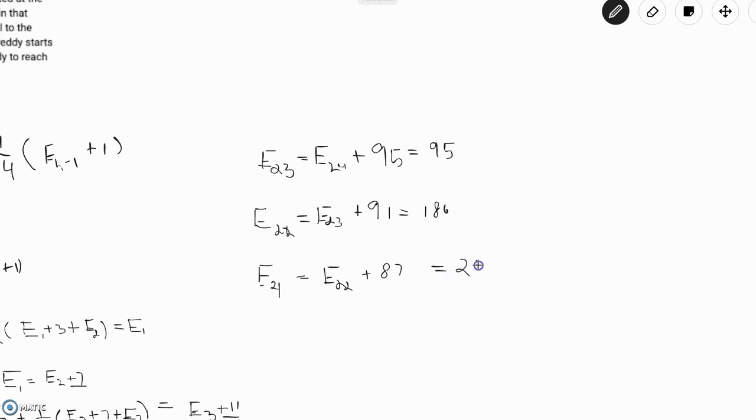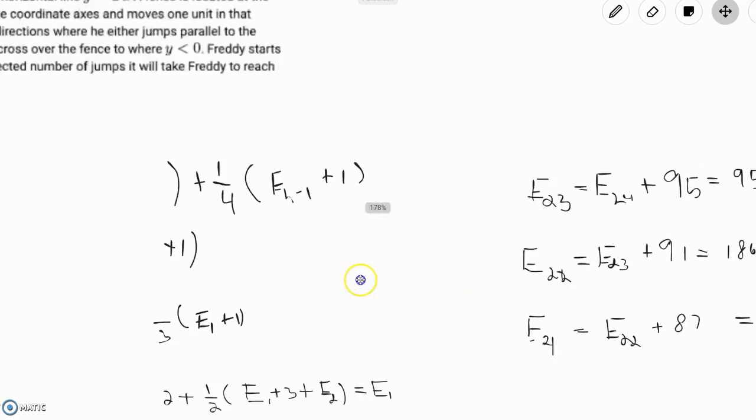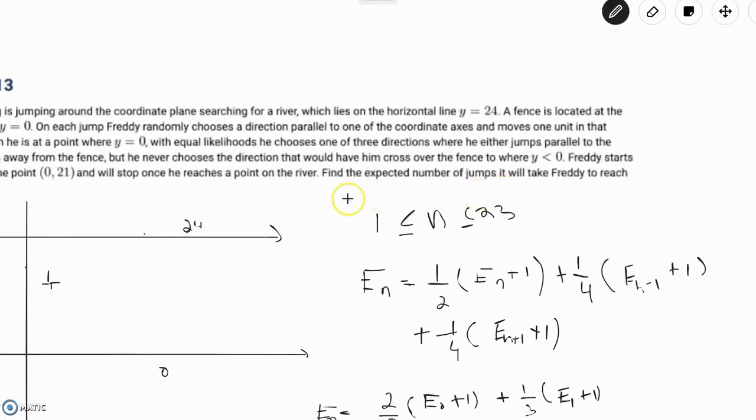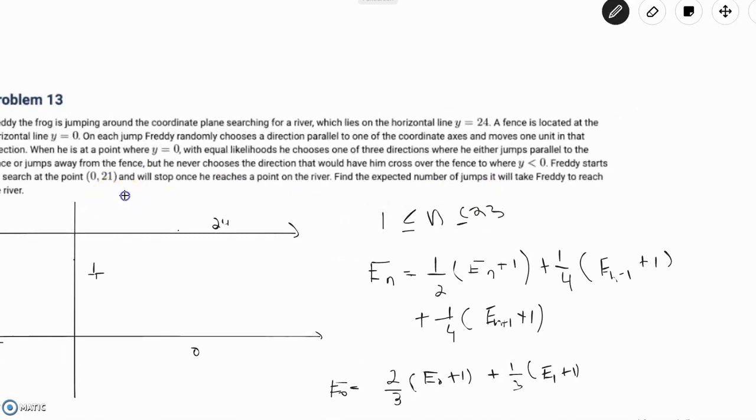So now that we've solved for E(21), we go back to the problem and see if it asks for anything else. It just asks for the expected number of jumps when it starts from (0, 21). And we have that is equal to 273. So that is our final answer and we are done.